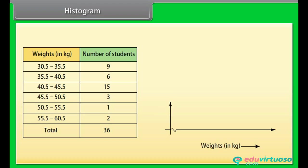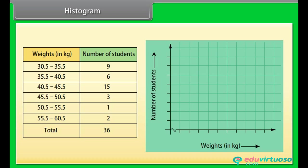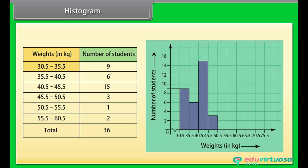To plot the histogram, we represent weights on the horizontal axis and the number of students on the vertical axis. Since the maximum frequency is 15, we choose the scale to accommodate it. Since the first class interval starts from 30.5 and not 0, we mark a break on the axis. We draw the rectangle for class interval 30.5 to 35.5 and similarly draw the other rectangles. This is called a histogram.